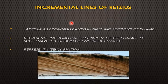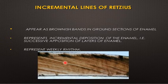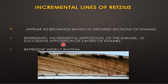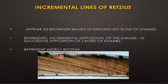There are three types of incremental lines present inside the enamel. The first is the incremental line of Retzius, or striae of Retzius. This line runs from the dentino-enamel junction to the enamel surface and is a hypocalcified area appearing as a brownish band in the ground section of the enamel. It represents incremental deposition of the enamel — successive apposition of layers — reflecting the weekly rhythm of enamel formation. It is present in both longitudinal and cross sections of the ground section.